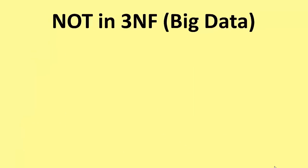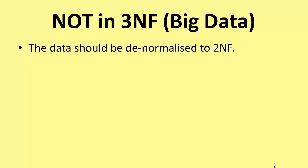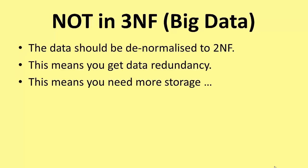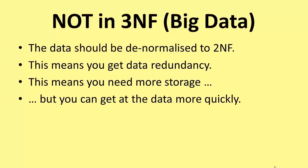Data warehousing is not in third normal form — hence its nickname, Big Data — because anything that's not normalized will also be much bigger than a fully normalized database. The database should be denormalized in a particular way, into second normal form. This means that you get data redundancy, which means you need more storage, but also means you can get at the data more quickly. And more quickly is what data warehousing is all about.